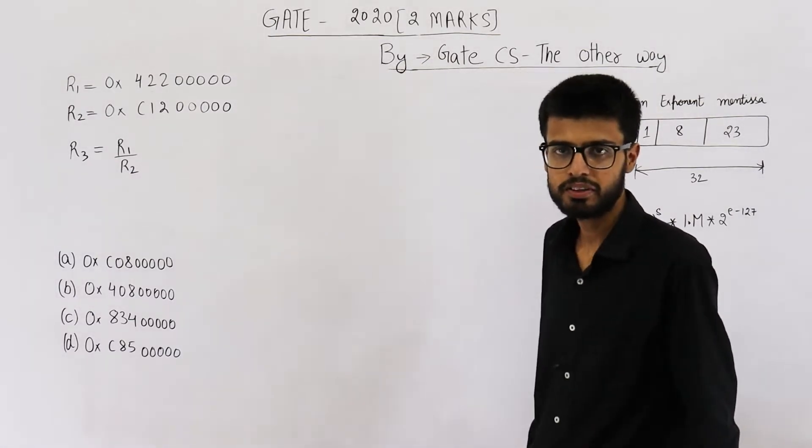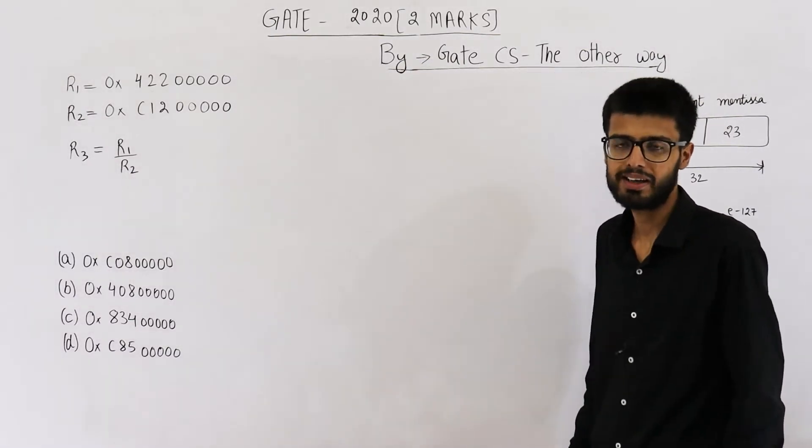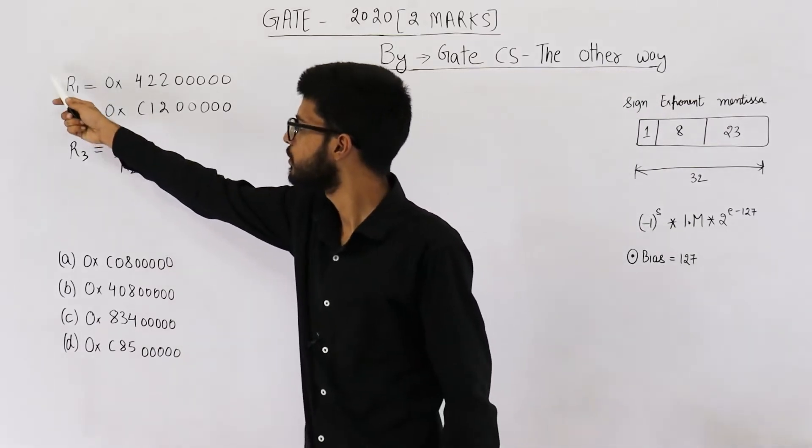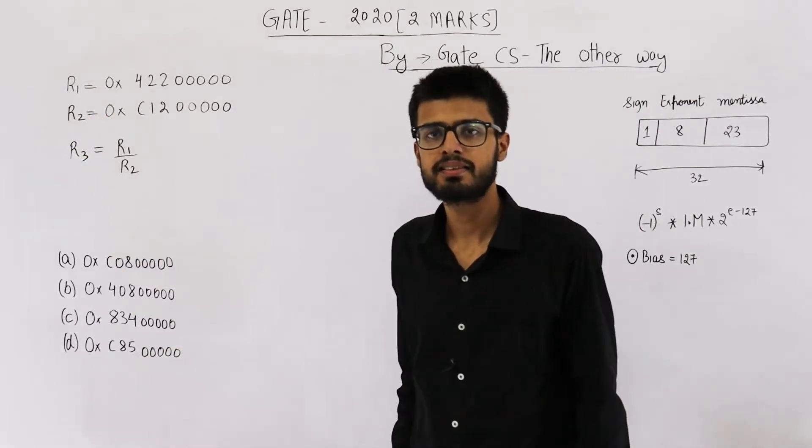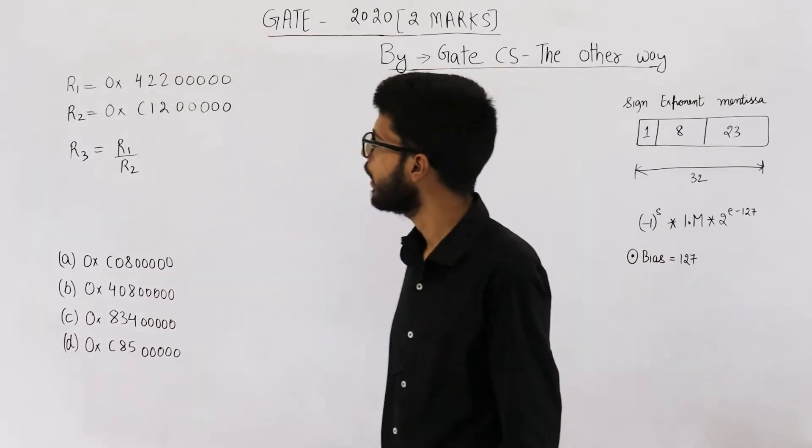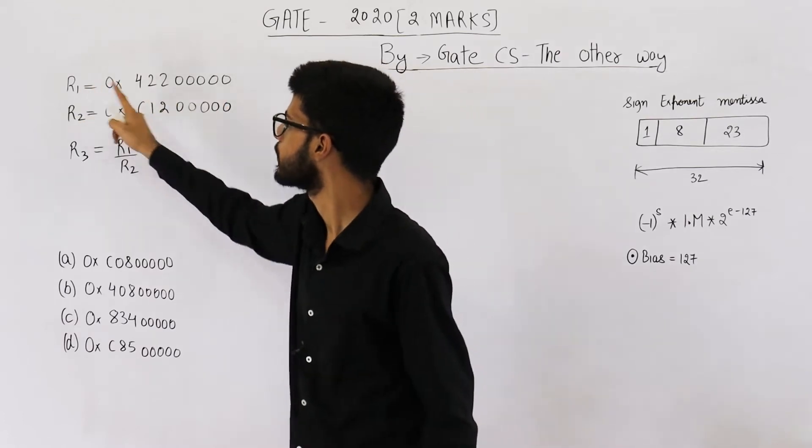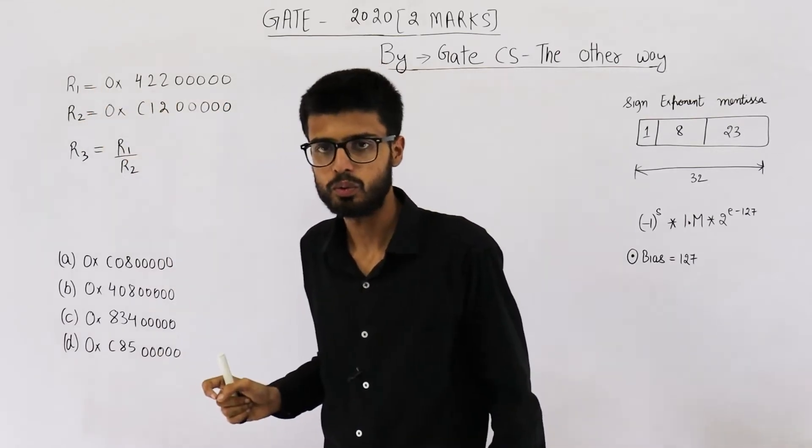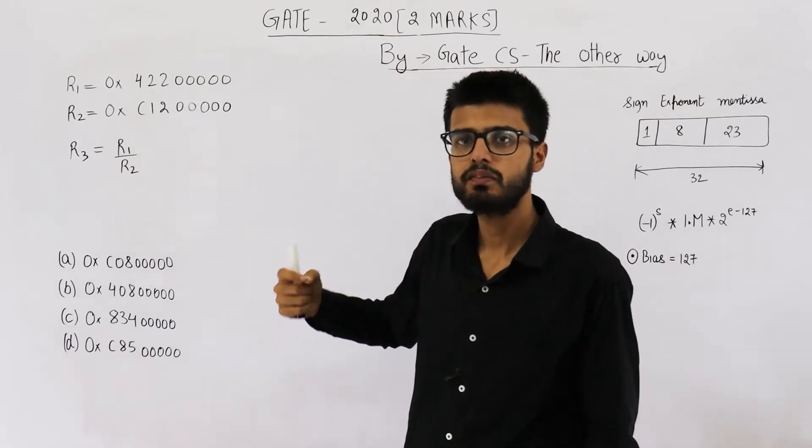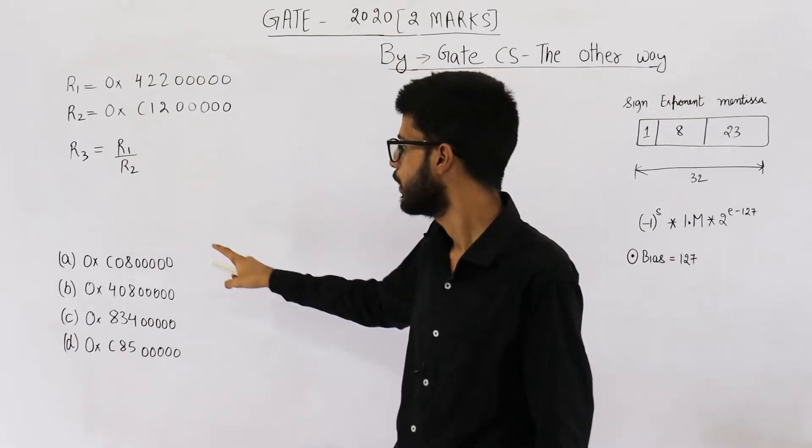Hello people, welcome back. The question is from GATE 2020 exam, it's for two marks. They are saying if values in these three registers are saved in IEEE single precision format, and these two values are saved in R1 and R2, R3 equals R1 by R2. What is the value saved in R3? We need to define which of these four will be this number divided by this number.